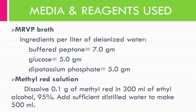Media and reagents for the Methyl Red test: the medium is MRVP broth, containing buffered peptone, glucose, and potassium phosphate in distilled water. The reagent is methyl red solution (0.02%), prepared by dissolving 0.1 gram of methyl red in 300 ml of 95% ethyl alcohol, then adding sufficient distilled water to make 500 ml. The solution is stored at 4–8°C in a brown bottle and is stable for about one year.